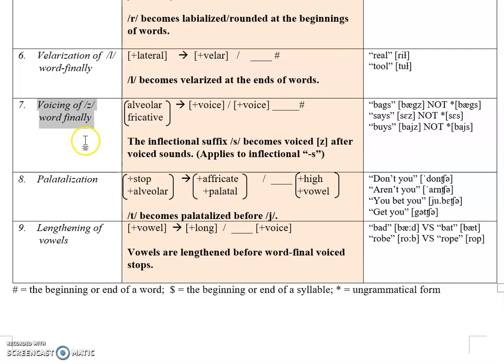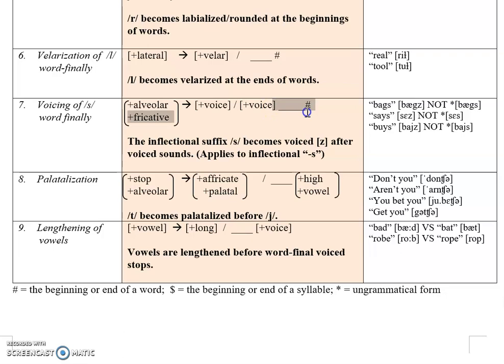Next we have voicing of the inflectional suffix /s/ word-finally. /s/ is an alveolar fricative and it gains voicing when something voiced precedes it, at the end of a word. The inflectional suffix /s/ becomes voiced /z/ after voiced sounds. For example, the word 'bags' — the /g/ is voiced, so it's not pronounced 'bags' with an /s/, but with a /z/ pronunciation — it is voiced.